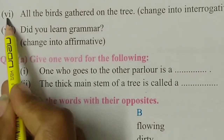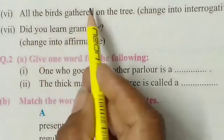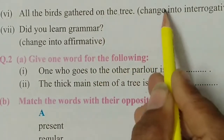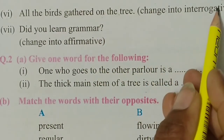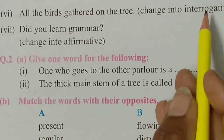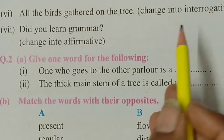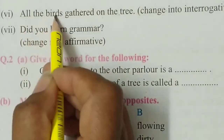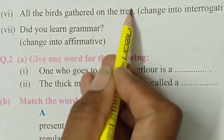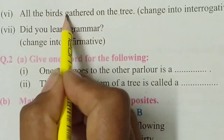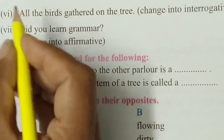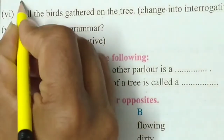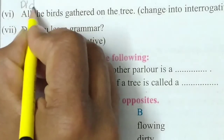Number six: all the birds gathered on the tree — change into interrogative. Interrogative means we have to make a question sentence. This sentence is in simple past, and the helping verb of simple past is 'did'.